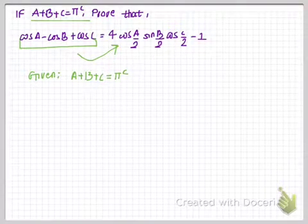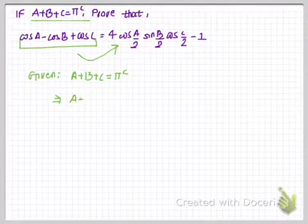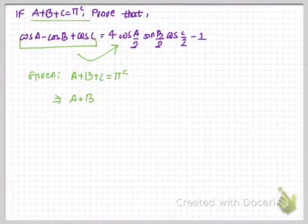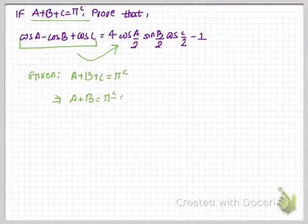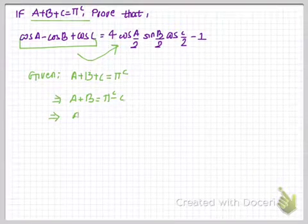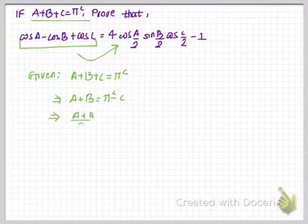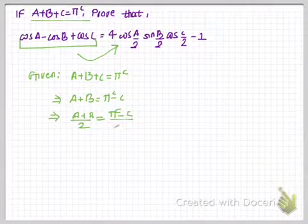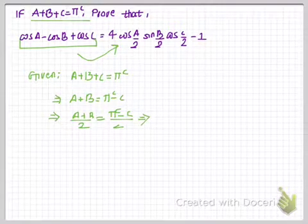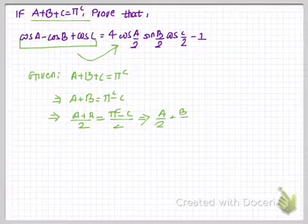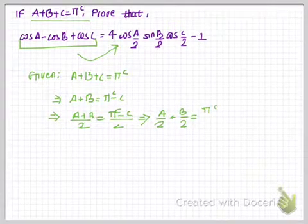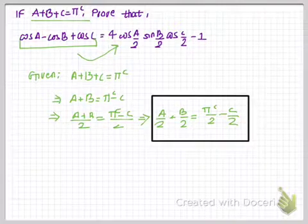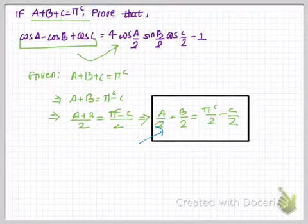The given condition is A + B + C = π. I'm going to subtract C from both sides, giving A + B = π − C. Now dividing both sides by 2 gives (A + B)/2 = (π − C)/2, which on further simplification gives A/2 + B/2 = π/2 − C/2.